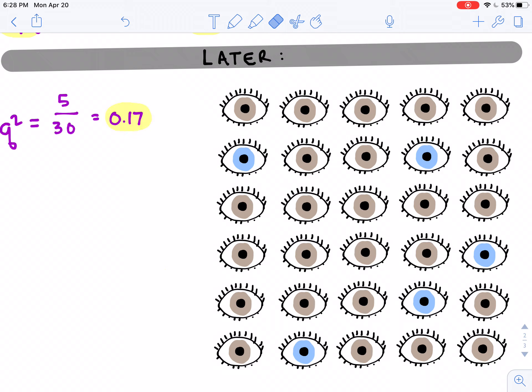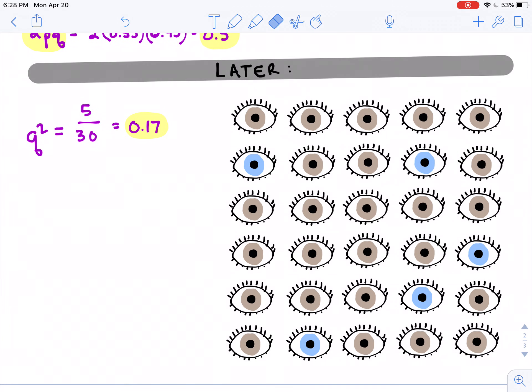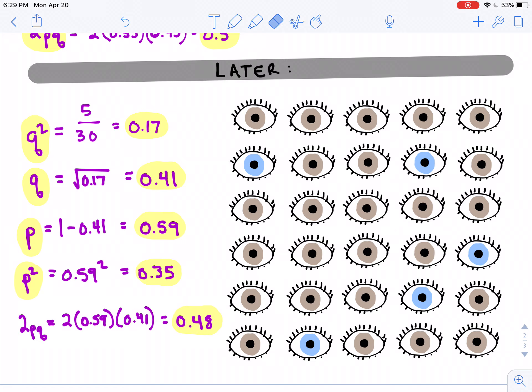Now this is meant to represent the same population, but I come back a certain amount of time later, and I'm going to redo the same calculations as I did before. Q squared is five blue-eyed individuals, those individuals expressing the homozygous recessive genotype. That comes out to be 0.17. That allows me to calculate q. Therefore, I can get p, which allows me to calculate p squared. Finally, 2pq.